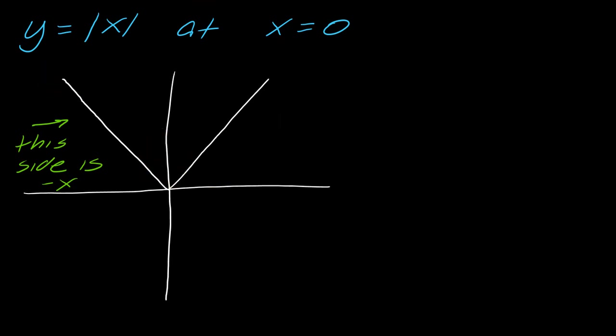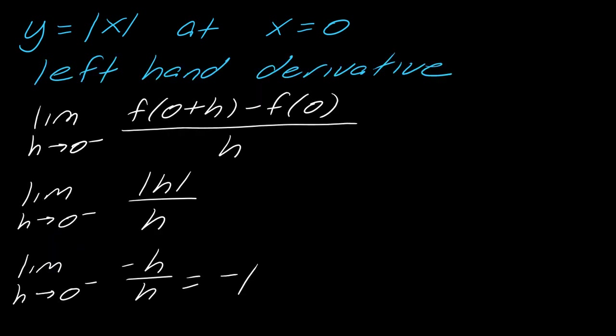And what is the slope of negative x? The slope of negative x is negative one. So that ties out with the left-hand side. So that's kind of a place where left and right-hand derivatives can come into play.